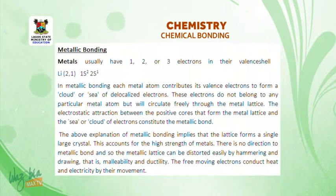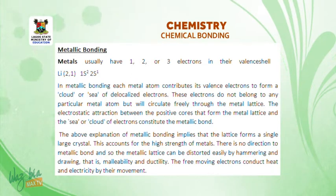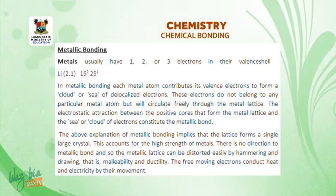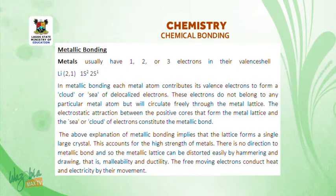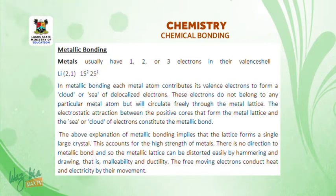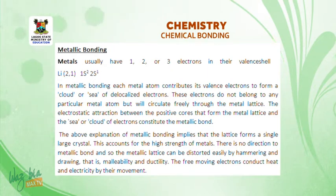Now let's move on to metallic bonding. Metals usually have one, two, or three electrons in their valence shell — for example, lithium has the configuration 1s², 2s¹. In metallic bonding, each metal atom contributes its valence electrons to form a cloud or sea of delocalized electrons. These electrons do not belong to any particular metal atom, but circulate freely through the metal lattice. The electrostatic attraction between the positive cores that form the metal lattice and the sea of electrons constitutes the metallic bond. This implies that the lattice forms a single large crystal, which accounts for the high strength of metals.